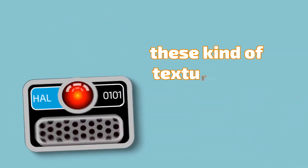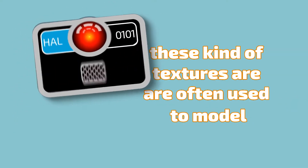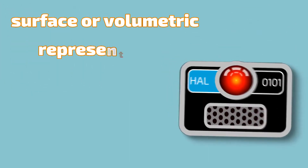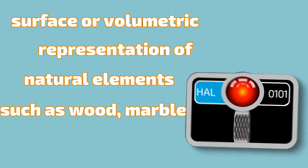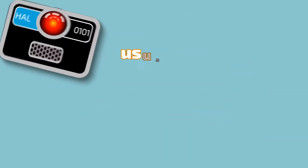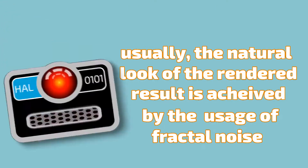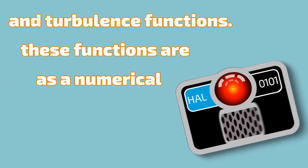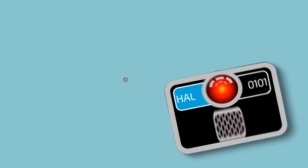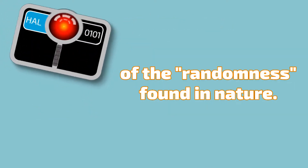These kinds of textures are often used to model surface or volumetric representations of natural elements such as wood, marble, and others. Usually the natural look of the rendered result is achieved by the usage of fractal noise and turbulence functions. These functions are used as a numerical representation of the randomness found in nature.